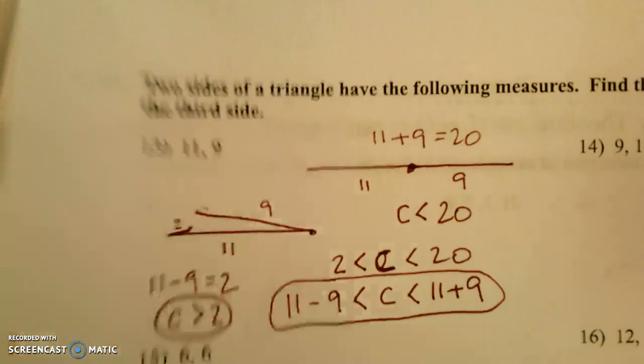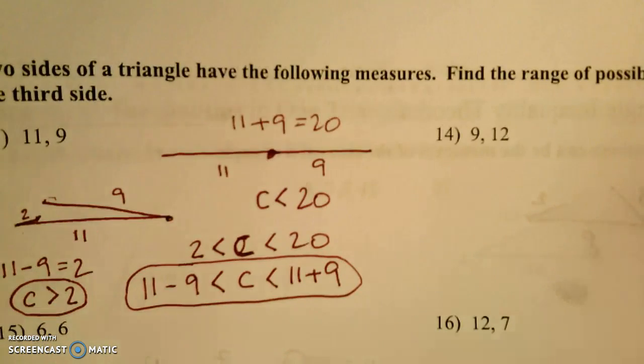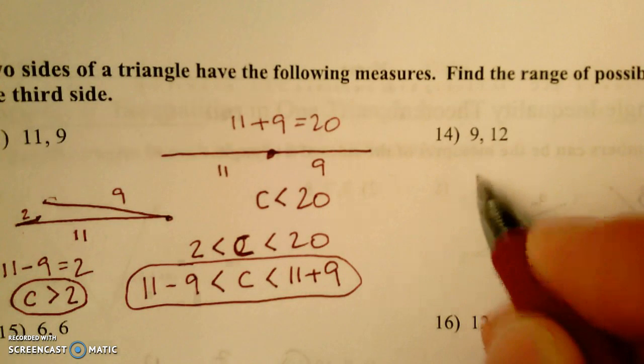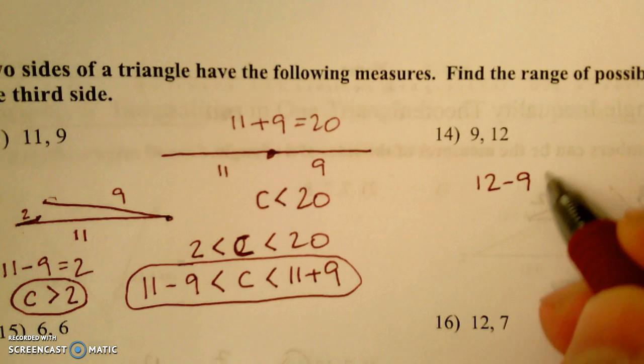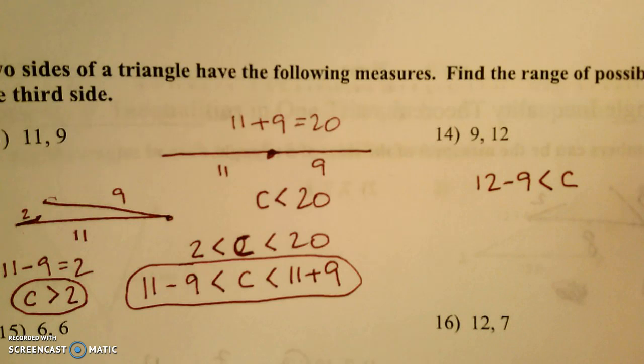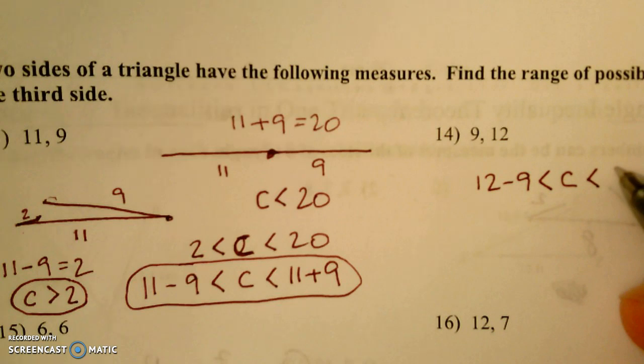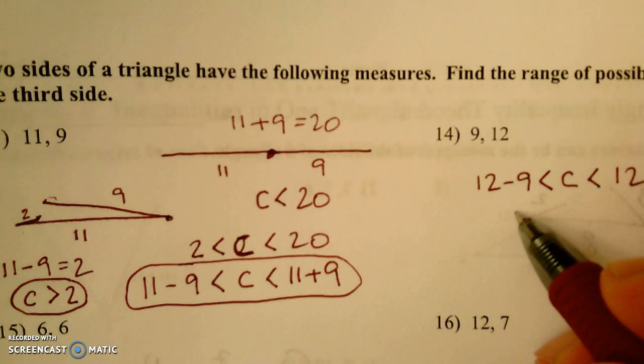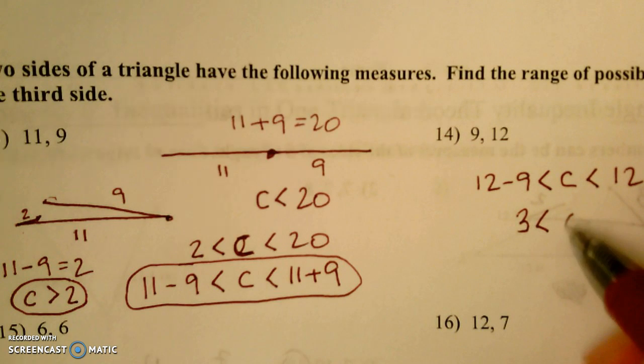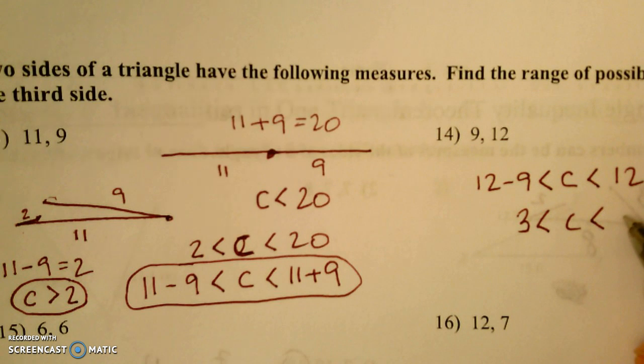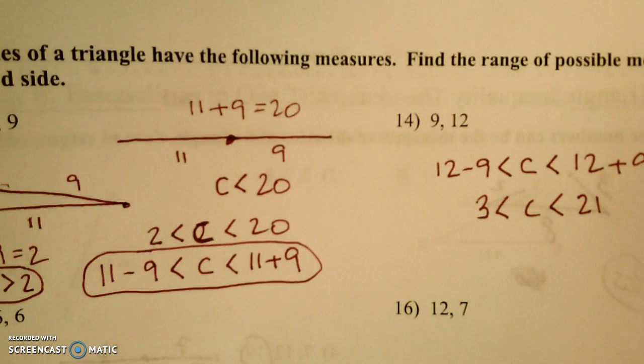Let's take a look at the one next door. In this case, 12 minus 9 would have to be our lowest number, or actually lower than our lowest. Our c has to be bigger than that and less than 12 plus 9. So we've got 12 minus 9 is 3 to 21, somewhere between 3 and 21.